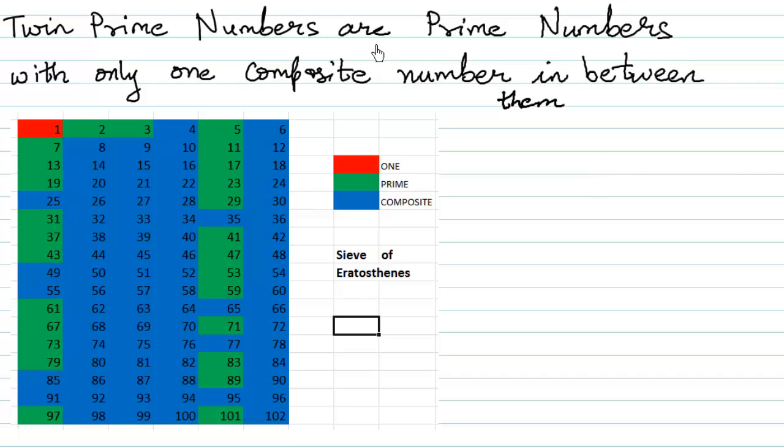Twin prime numbers are prime numbers with only one composite number in between them. So, for instance, 3, 5, 7, 11, all the numbers in green are prime numbers.